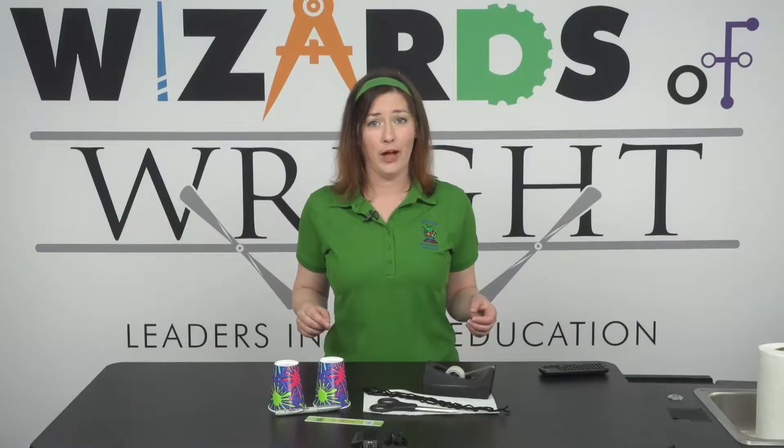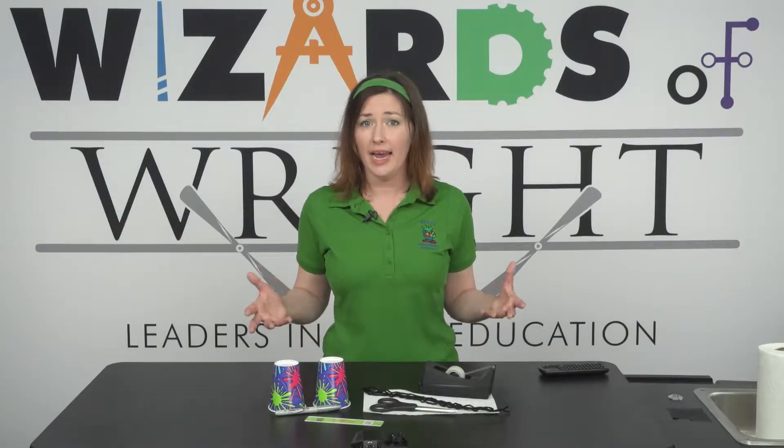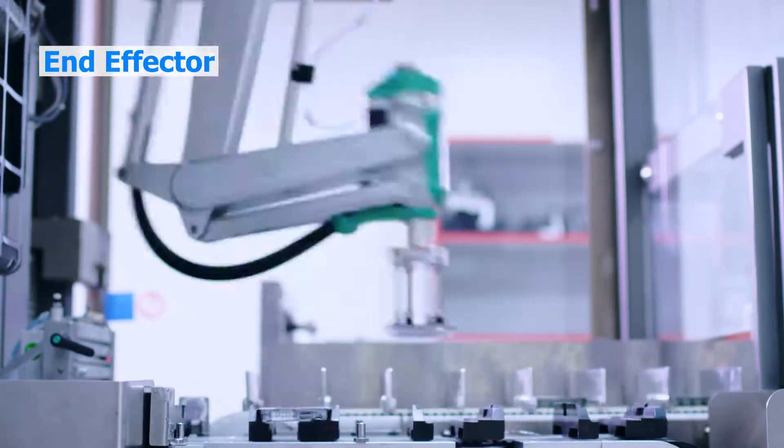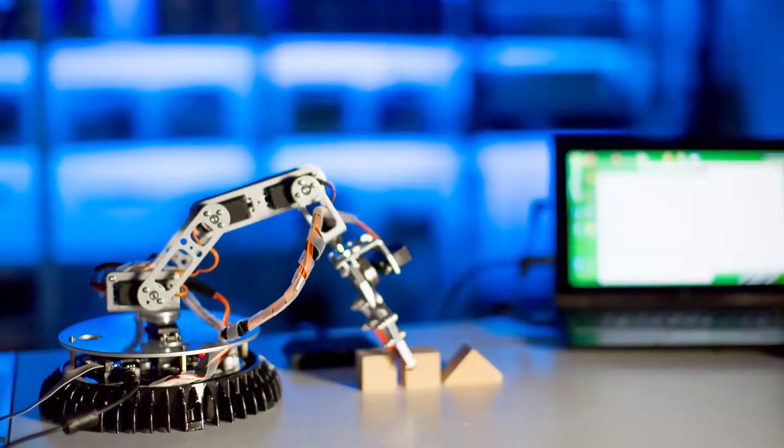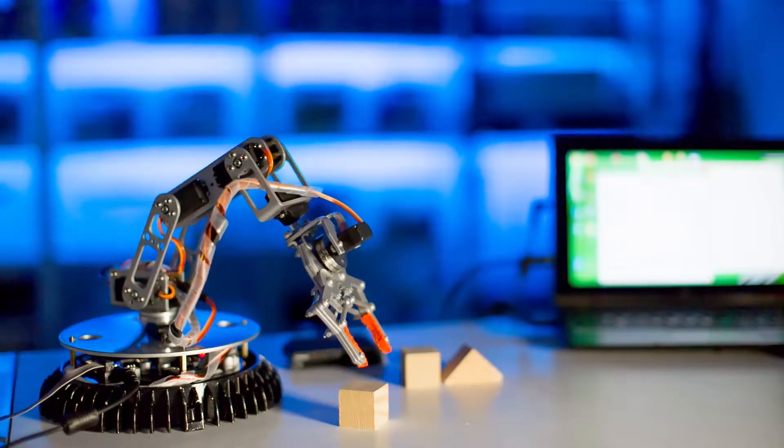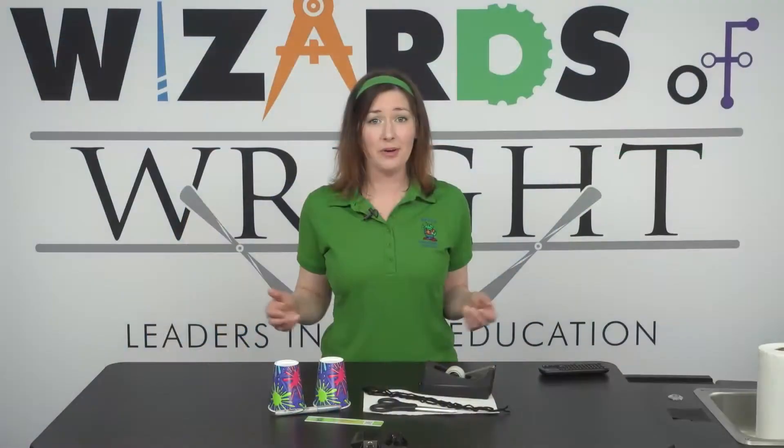One important part of the robot is the tool, gripper, or hand at the end of the arm that does the work. This is called the end effector. End effectors come in many different shapes and sizes. The exact nature depends on the application of the robot. Let's start building ours.